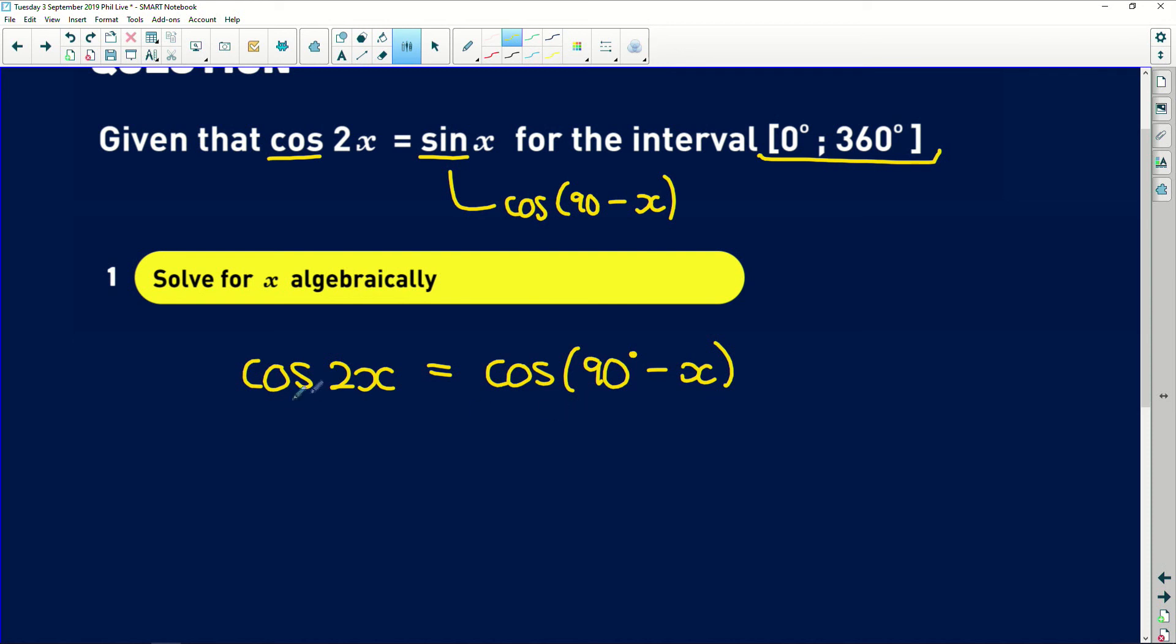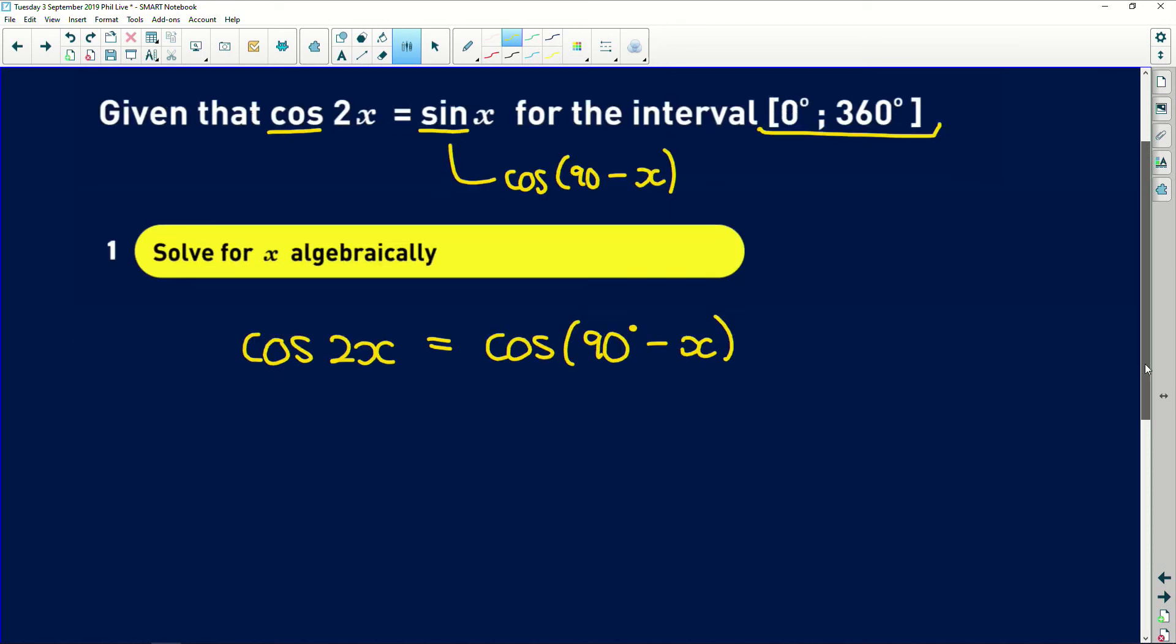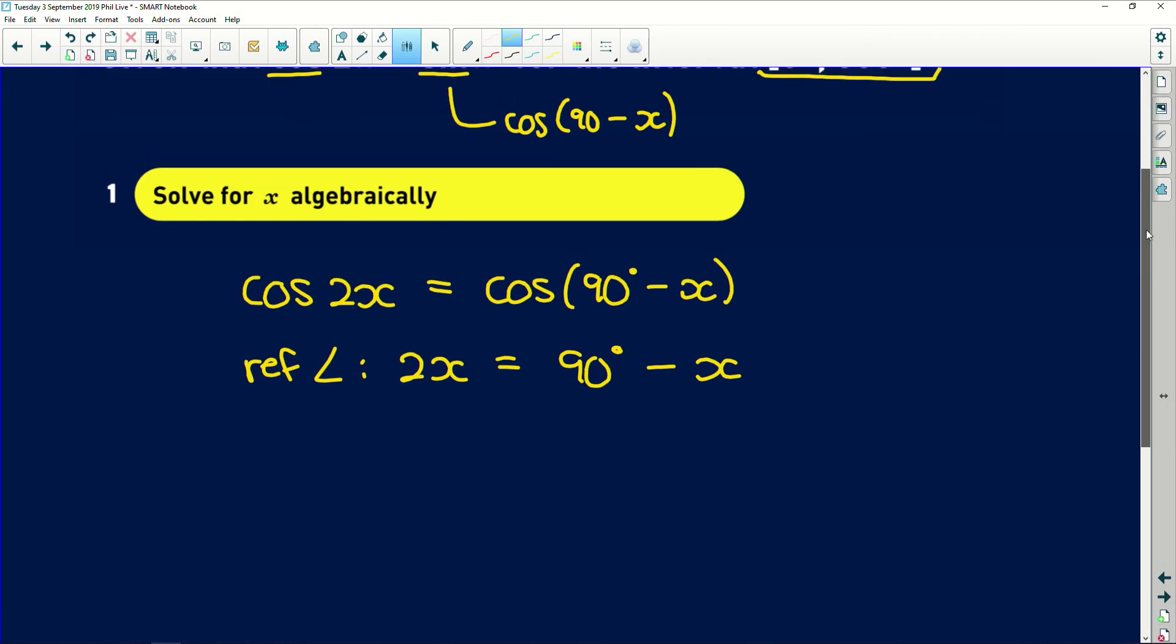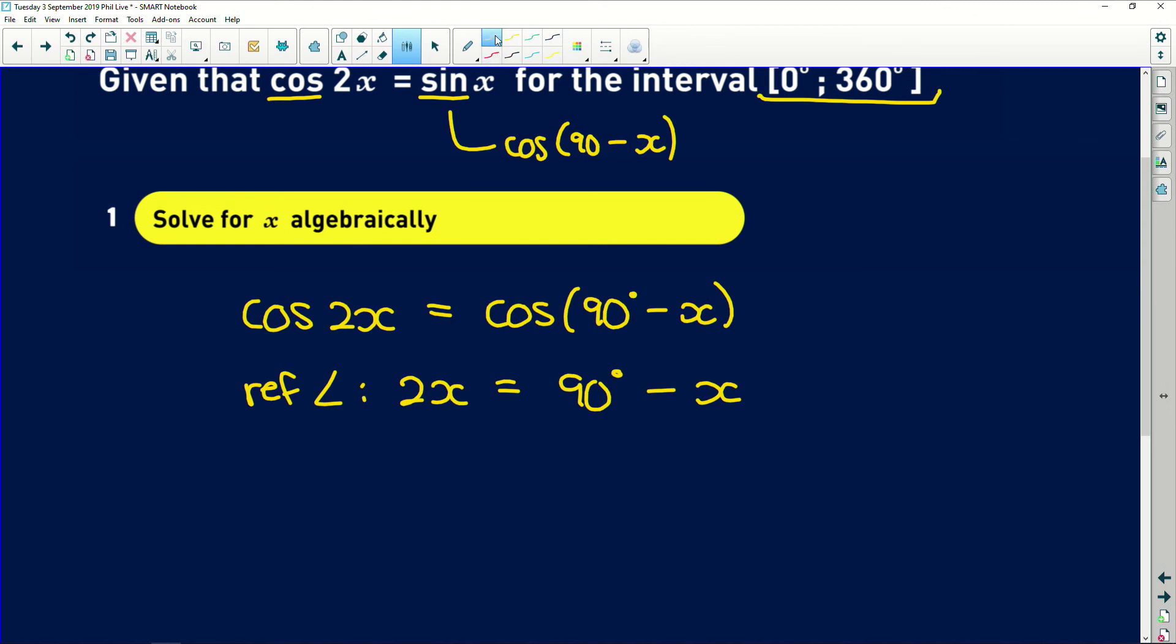And now because we have the same trig ratio we can simply equate the angles. So that is where your reference angle comes from. We can say because it's cos of both of them 2x is equal to 90 degrees minus x. But now this is where the tricky part comes in. Remember your CAST diagram.